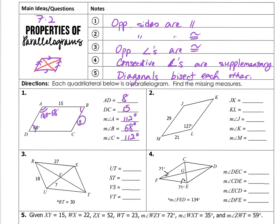So let's look at number three. I have UT is opposite of RS, so UT must be 27 as well, and ST must be 18 because it's congruent to RU. VS, which is right here, right?